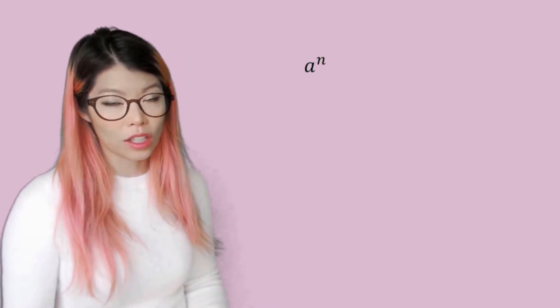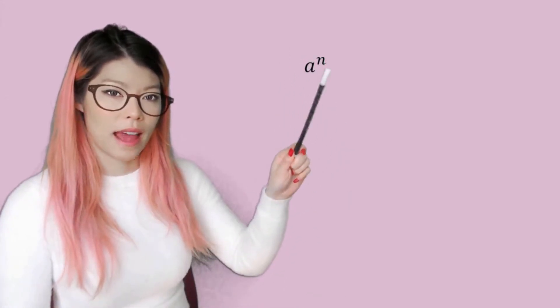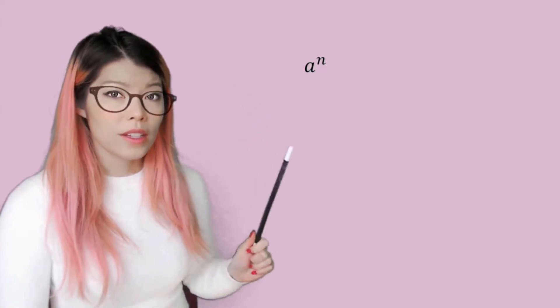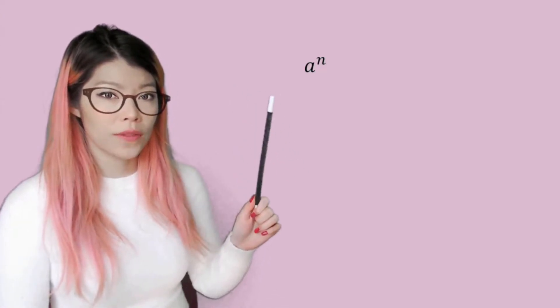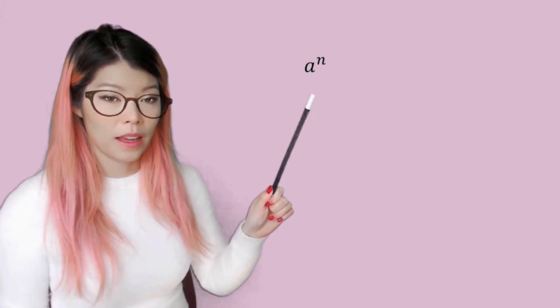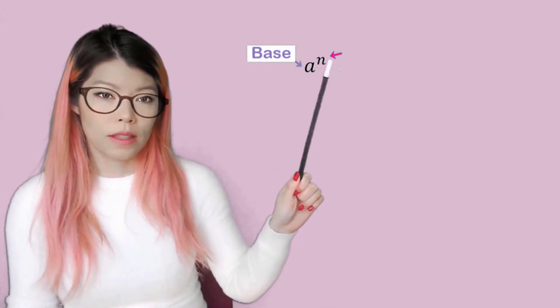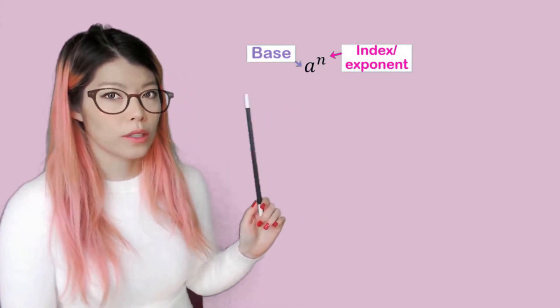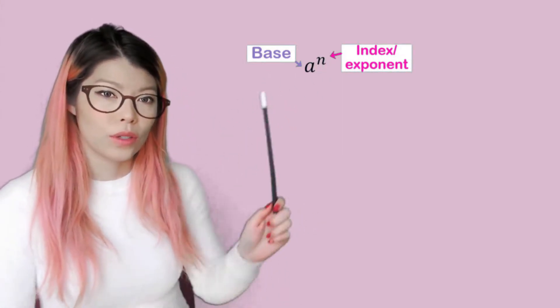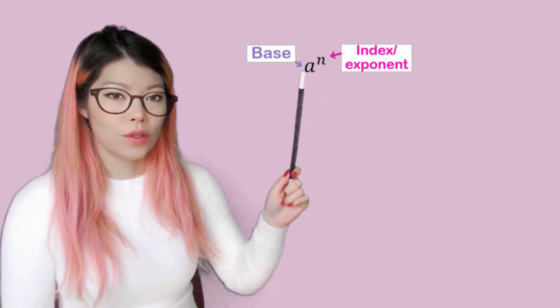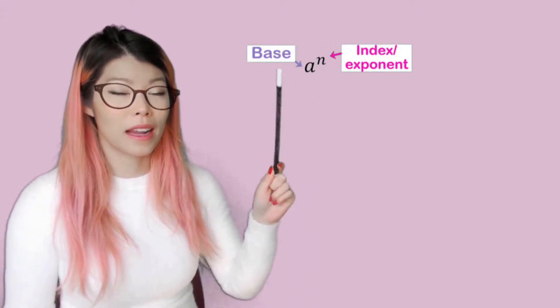Let me start by clarifying something. In different countries that speak English, we refer to this with various names. The common name is that that's an expression. In some countries they call it power, some countries they call it indices. So to avoid confusion, in this video we're just going to call it expression. The bottom number is always referred to as base, and the top little number can be referred to as index, exponent, or power. We will usually use the word power because that's what I grew up with. So this will be a to the power of n, and this is an expression.